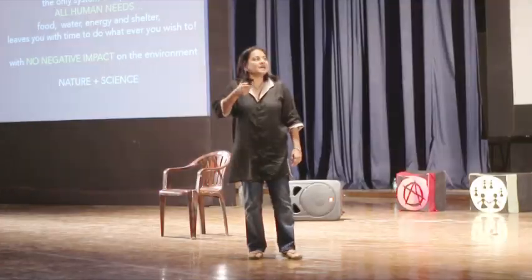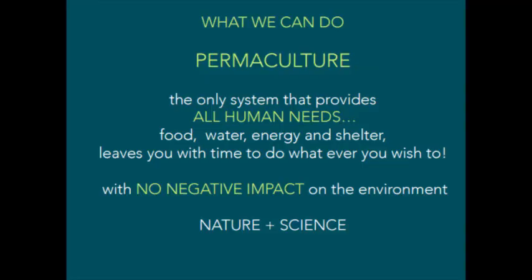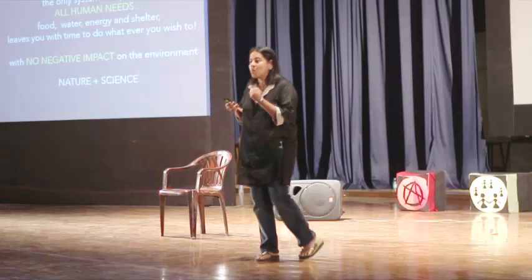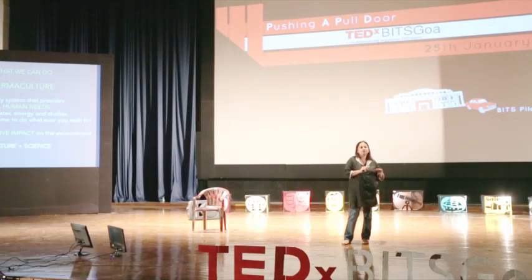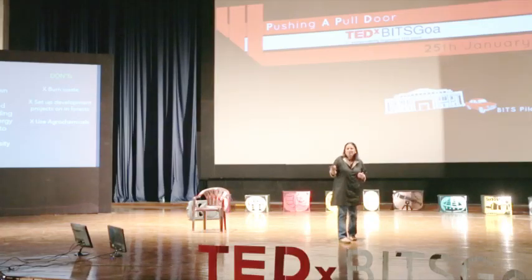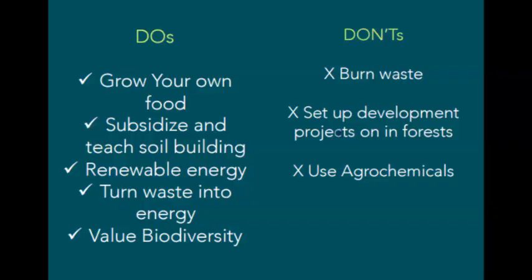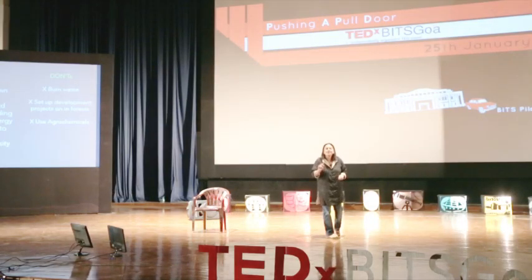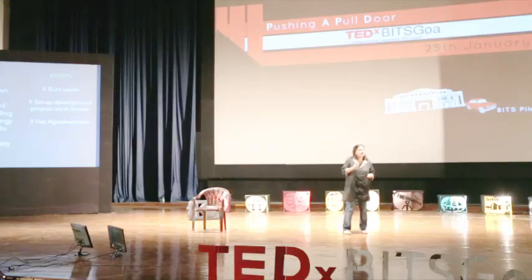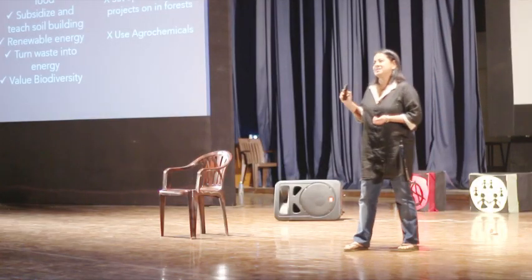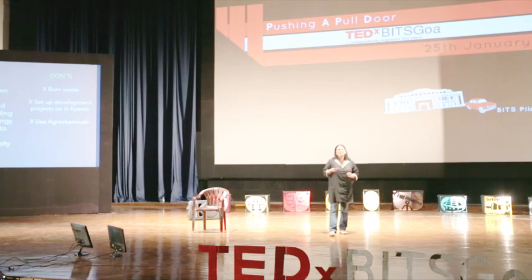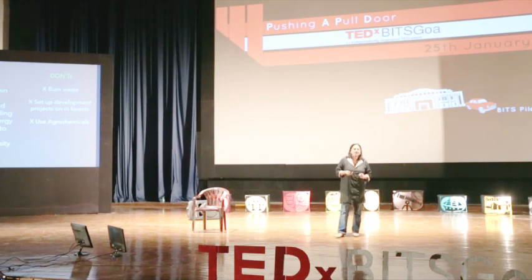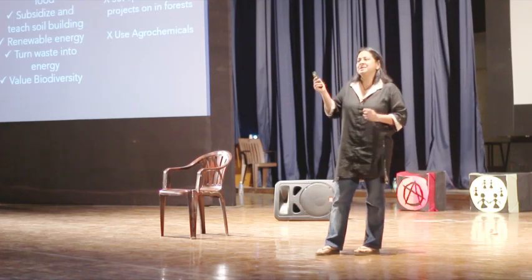What can we do? Permaculture. Permaculture addresses all human needs — food, water, shelter, and energy — with absolutely no environmental impact. It's not just about growing food or farming; it's how you live. Some pointers: grow your own food; tell your government to subsidize soil building; turn waste into energy or fertility; value biodiversity, which is vital for fertility and life; don't burn waste; tell your governments not to set up development projects in forests when there's enough barren land; and minimize the use of agrochemicals.